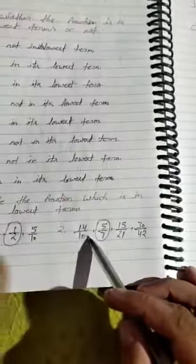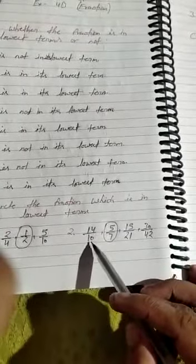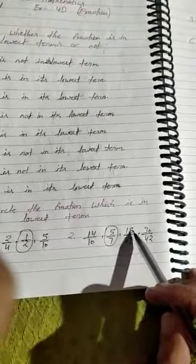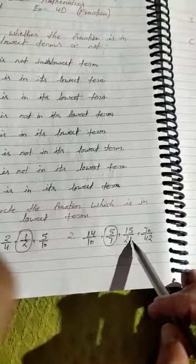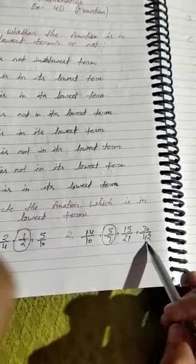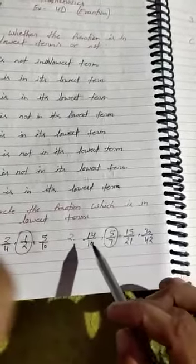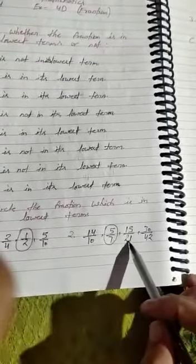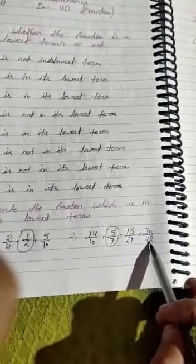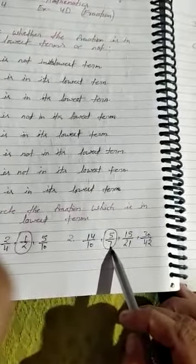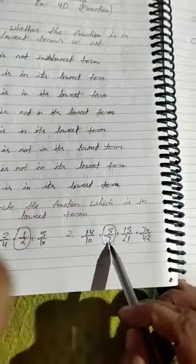14 upon 10, 15 upon 21, and 30 upon 42 can all be simplified. All these fractions - the 1st fraction, 3rd fraction, and 4th fraction - are not in lowest terms. But fraction 5 upon 7 is in lowest term, so we circle it.